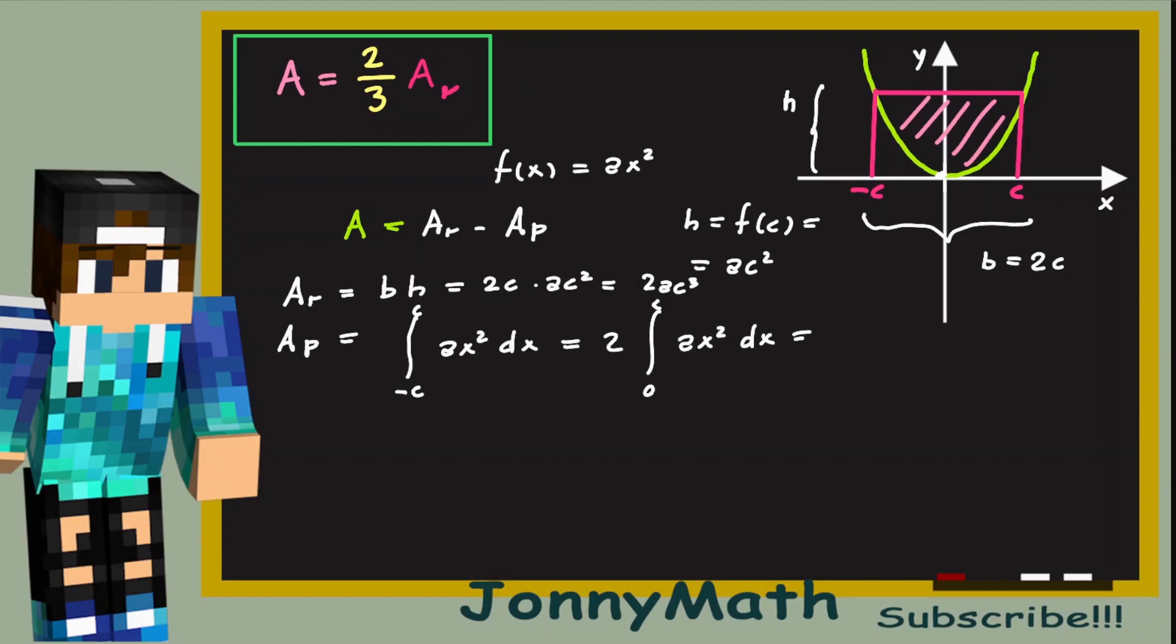So we now have to solve this integral. This is very simple. We can move a outside the integral sign since it is a constant. So 2a times the antiderivative of x squared is just x cubed over 3. Just the power rule for integrals. And it goes from 0 to c. So this is just 2ac cubed over 3 plus 0. That is 2 thirds times ac cubed.